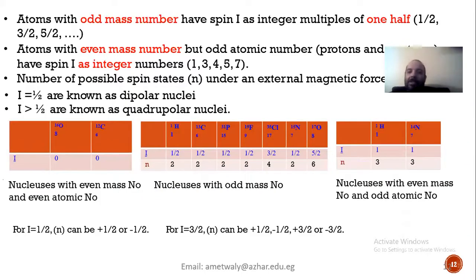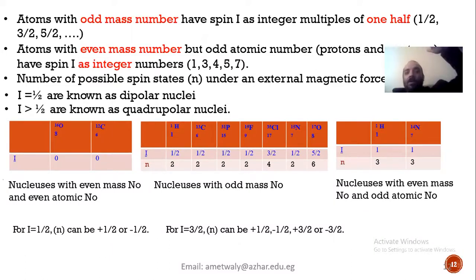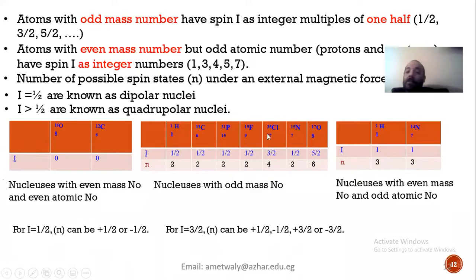This table shows some nuclei. For example, the proton has a spin quantum number equal to one-half — under a magnet it gives only two energy states: lower and higher. Carbon-13, phosphorus, fluorine, nitrogen-15 all have spin quantum numbers of one-half or multiples of one-half. However, I cannot use chlorine-35 because it is three-halves and gives four energy stages, or oxygen at five-halves giving six stages. But I can use proton, carbon-13, phosphorus, fluorine, and nitrogen-15.